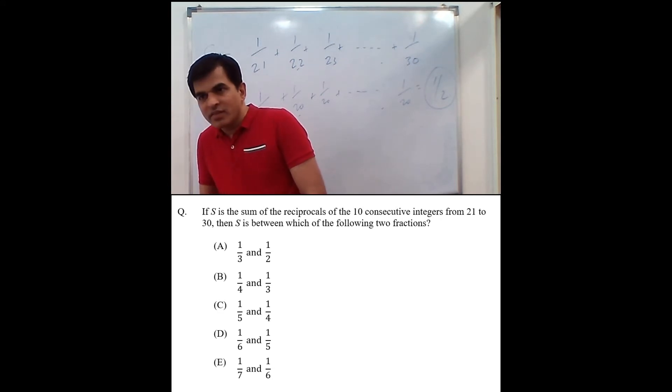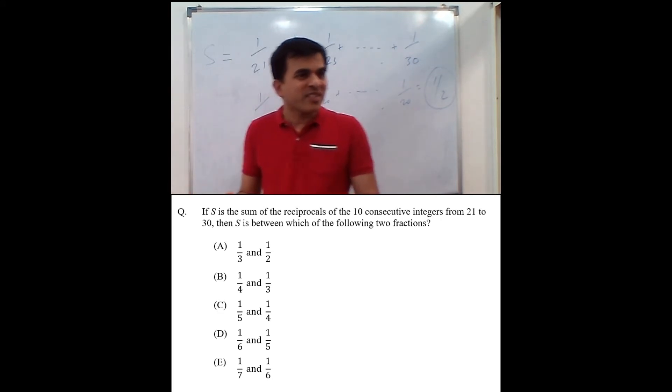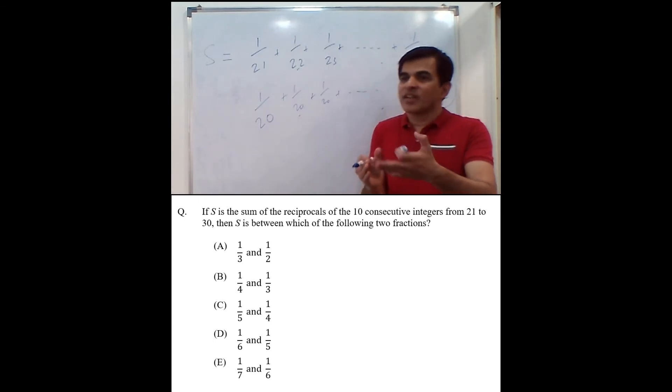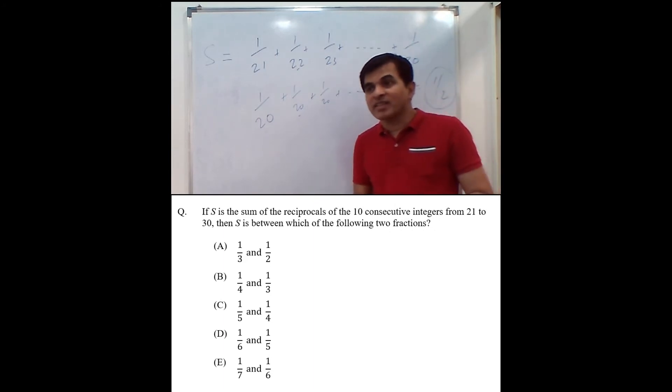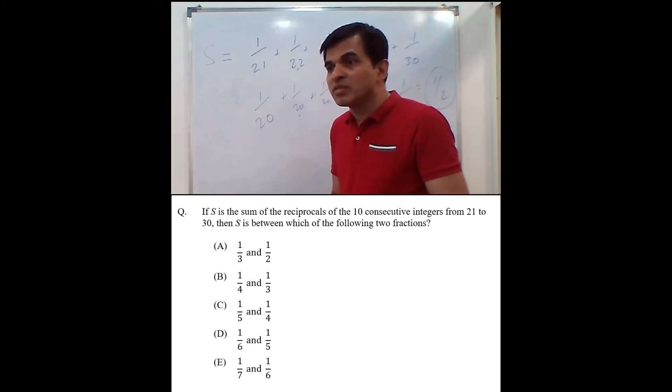Of course, given the options out here, only A remains. But let's say there was another option with half as the upper limit or something similar. Then we would have applied the same thought process at the other extreme, which is to make all of them as 1 over 30.